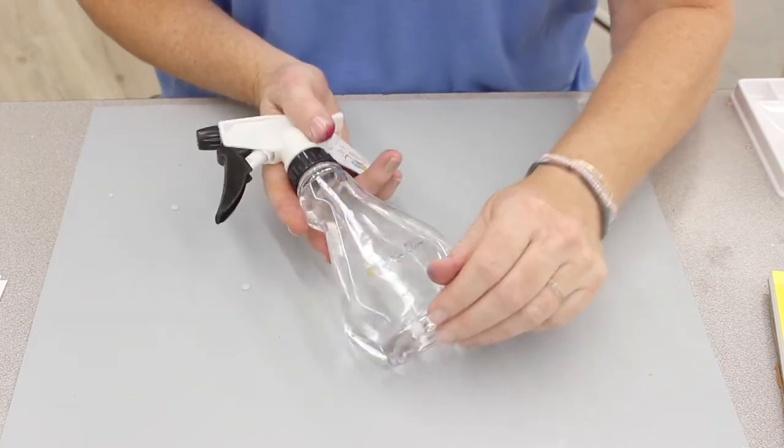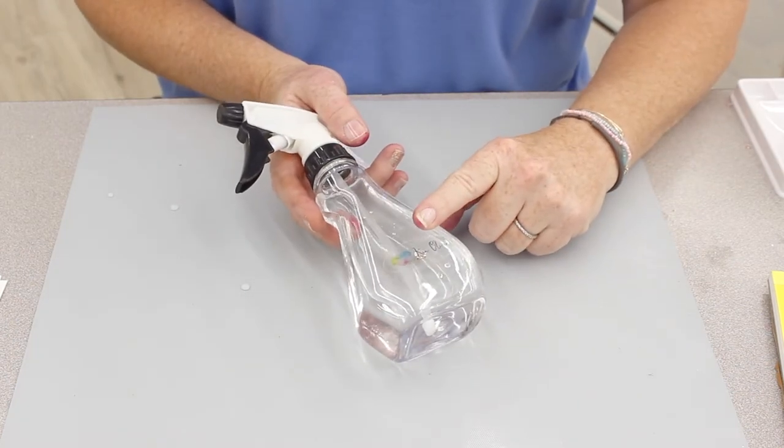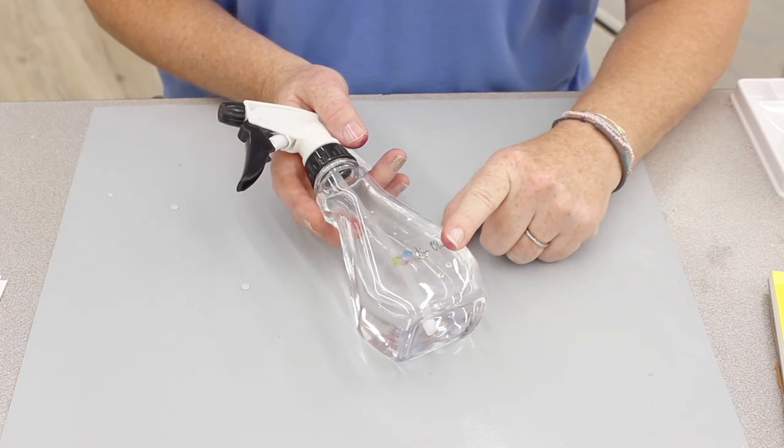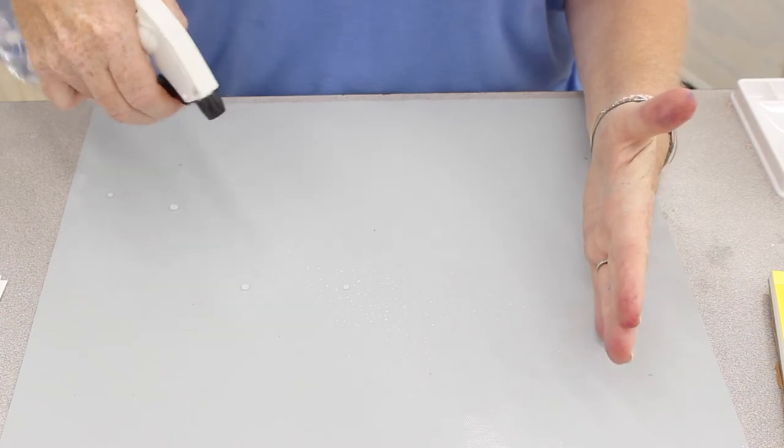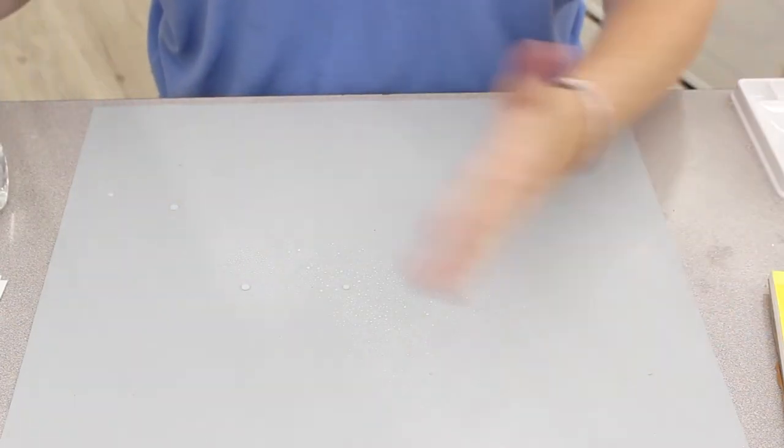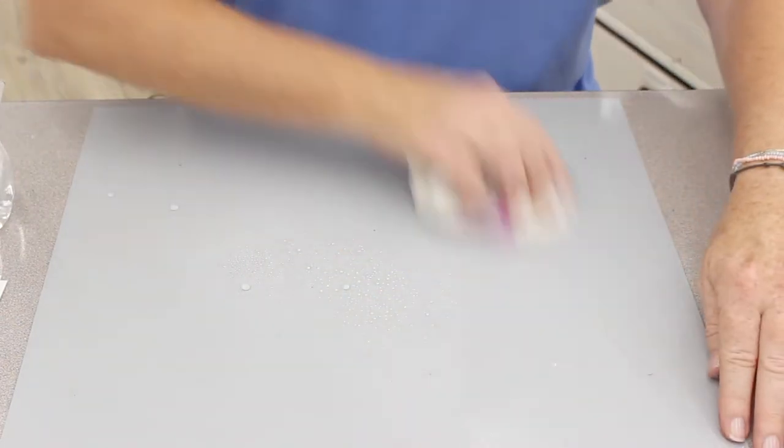The next tool that I'm going to show you about is the Ken Oliver spray bottle which can do a stream or you can adjust it and do a nice spritz all over the place and I'm just going to clean that up one more time before we get started.